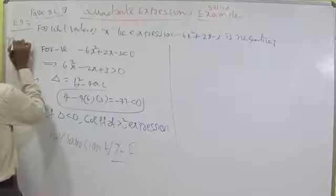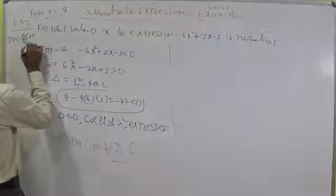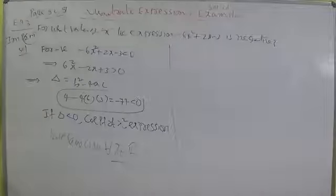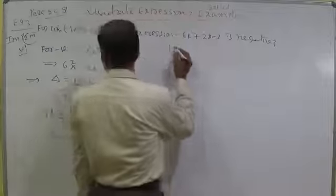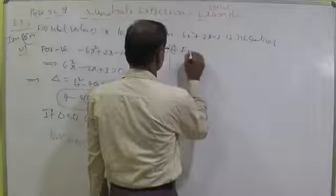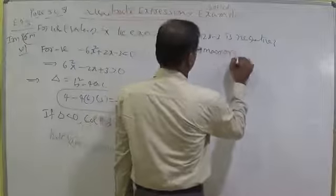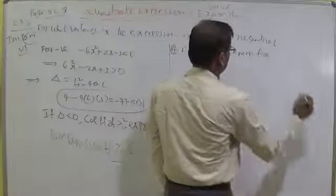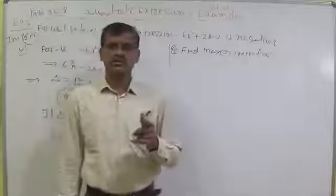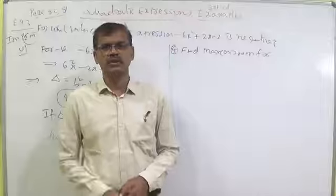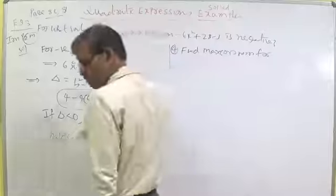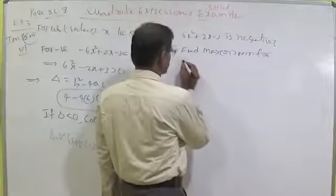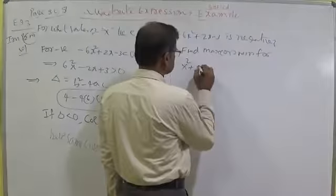This is an IPE 2-mark sum, based on the concept. Now, find the value of x for which the following expressions have maximum or minimum. A quadratic expression may be maximum or may be minimum depending on the coefficient of x², but not both. Here he is asking: find max or min for x² plus 5x plus 6.